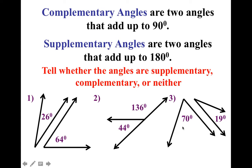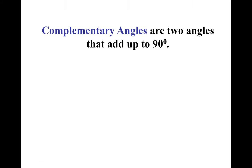Well, here at number 3, 70 plus 19, well that adds up to 89. That's not 90 or 180, so this is neither. Or neither, whichever you like.